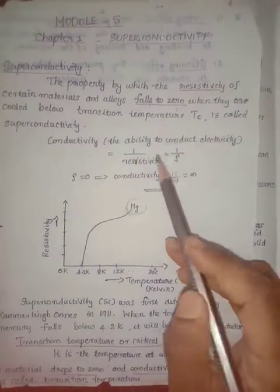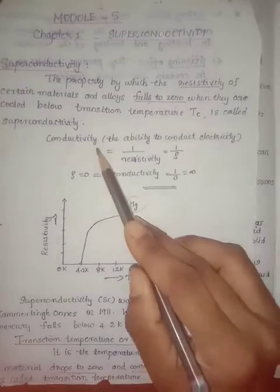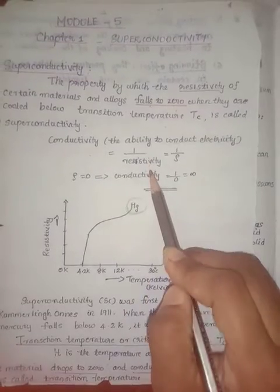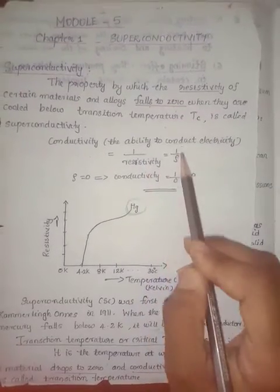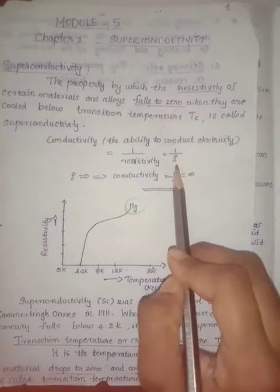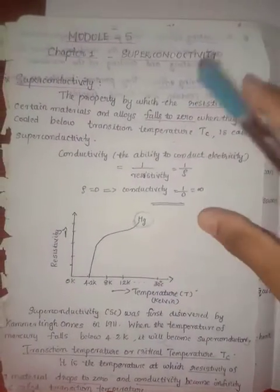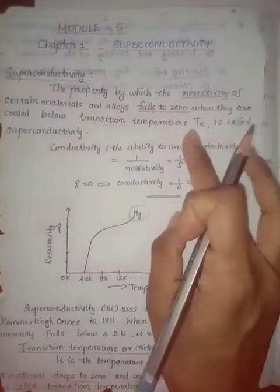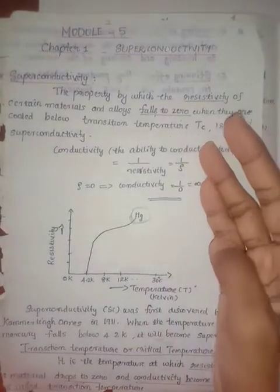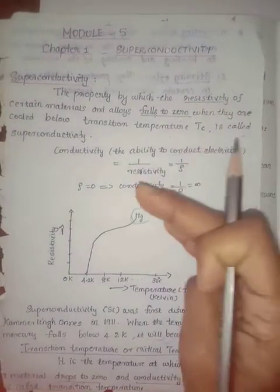Conductivity is the reciprocal of resistivity — that is 1 divided by rho. So when rho is zero, conductivity becomes infinity. This phenomenon is known as Superconductivity.